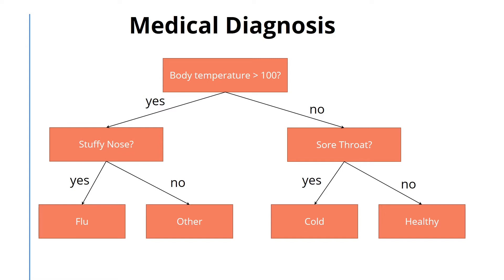The root of the tree tests whether your temperature is greater than 100 or not. Let's say your temperature is greater than 100. Then we check to see if you have a stuffy nose. The answer is either yes or no. If it is yes, then we say that you have the flu. And if it is no, we would say the patient had something else, or other. Note that here we provided a simple hypothetical tree structure to show the basic idea, so it cannot be used for real diagnosis.